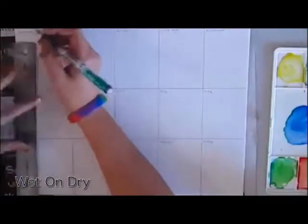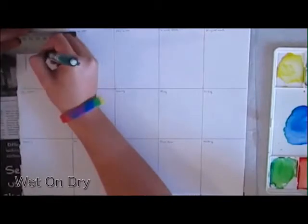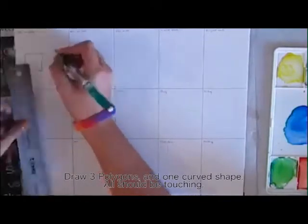Moving on, in your first box, draw 3 polygons and one curve shape. They should all be touching each other.